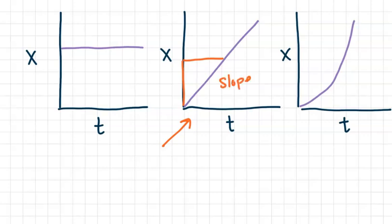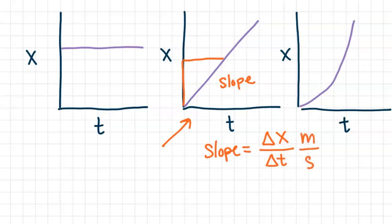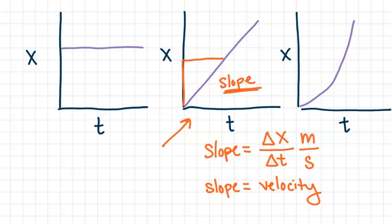When we look at the slope, it gives us our change in position over our change in time. The units for position are meters and the units for time are seconds, so the slope of a position-time graph gives us our velocity. We have to keep in mind that velocity is a vector quantity, so it includes both magnitude — the numerical value of our slope — but also direction. This slope is a positive slope, so it would be a positive velocity.